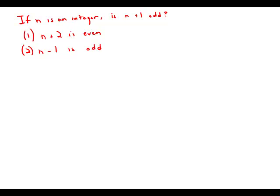If n is an integer, is n+1 odd? Statement 1 tells us that n+2 is even. Let's think about this. We know that if we take an even number and add 2, we get an even number. If we take an odd number and add 2, we get an odd number.